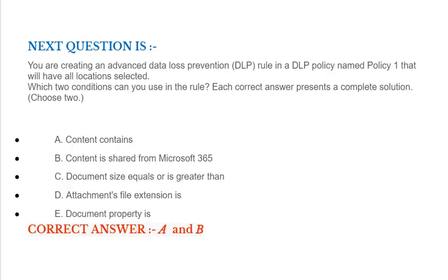Next question: You are creating an advanced data loss prevention (DLP) rule in a DLP policy named Policy 1 that will have all locations selected. Which two conditions can you use in the rule? Each correct answer presents a complete solution. Option A: Content contains. Option B: Content is shared from Microsoft 365. Option C: Document size equals or is greater than. Option D: Attachments file extension is. Option E: Document property is. Correct answer is Option A and Option B.